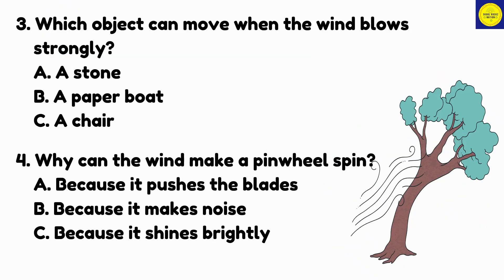Number 3: Which object can move when the wind blows strongly? A. A stone, B. A paper boat, C. A chair. Number 4: Why can the wind make a pinwheel spin? A. Because it pushes the blades. B. Because it makes noise. C. Because it shines brightly.